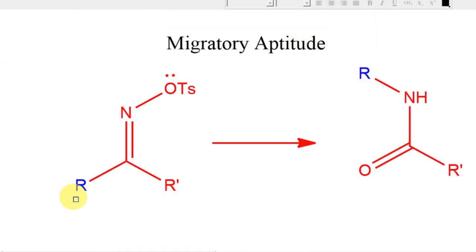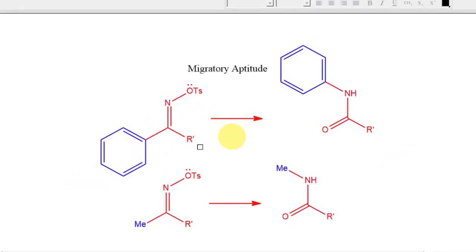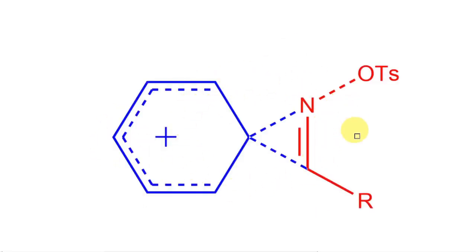The migratory aptitude of groups in Beckman rearrangement follows the order: phenyl > tertiary > secondary > primary carbon atoms > methyl. If the R group is a phenyl group, the rearrangement happens faster than if it is a methyl group, because the phenyl group stabilizes the developing positive charge during migration. We can think of a transition state where the positive charge developing is better stabilized by larger groups — the bigger the group, the better the stabilization.